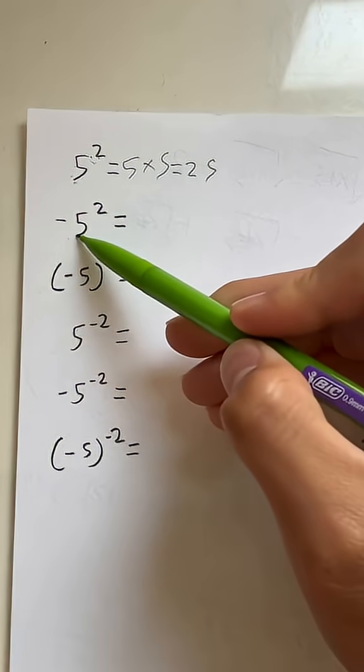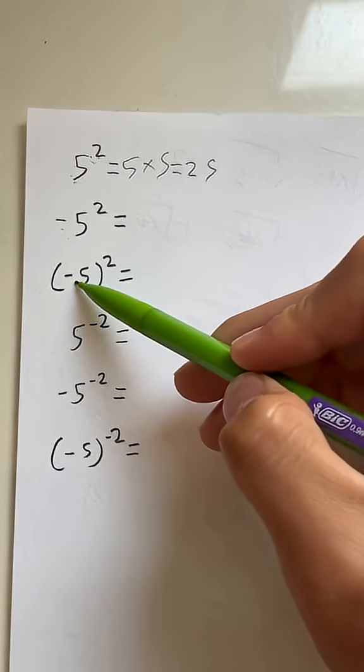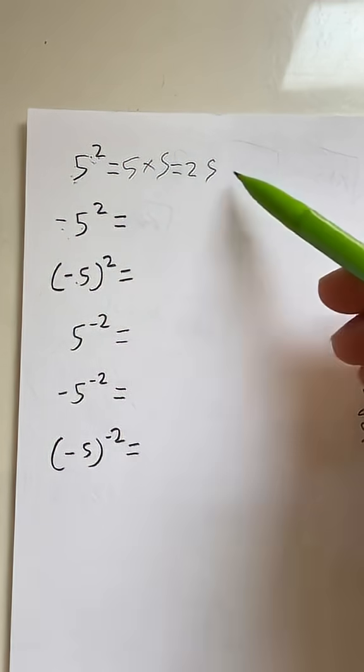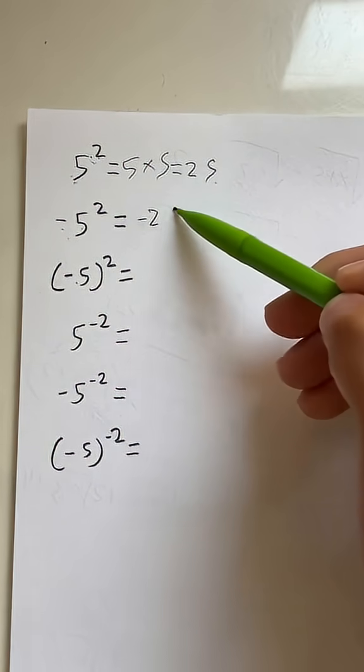What if it's like this? Basically, what this means is that if the negative is not inside the parentheses like this one, you have to do 5 to the second, which is 25, and this is just equal to negative 25.